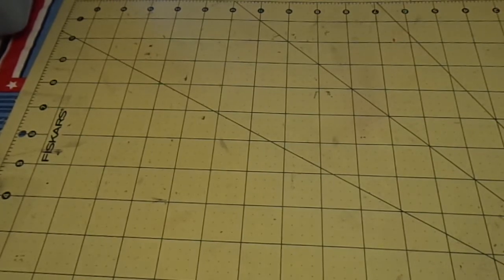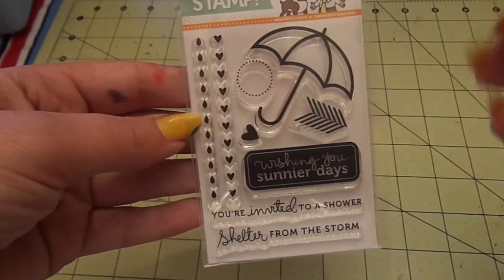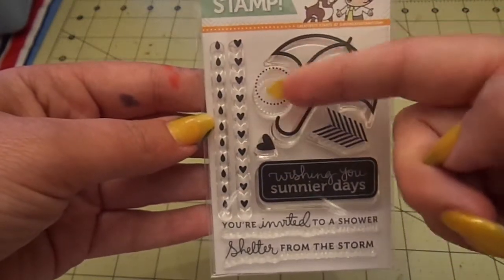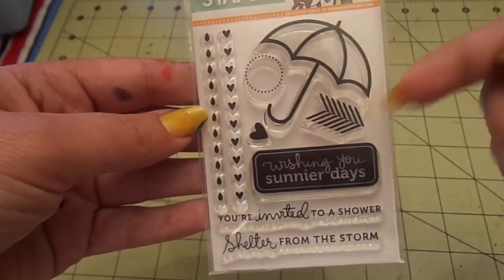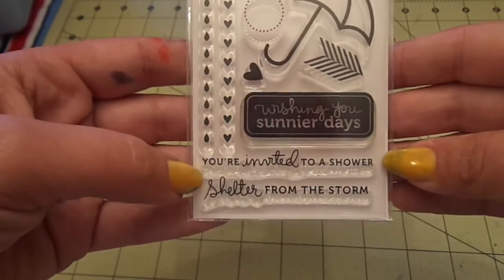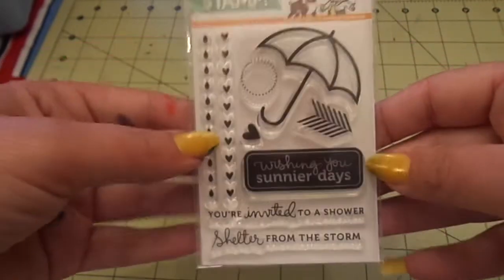So you get the sunnier days set which I love. I don't have this one. You get the raindrops, the hearts, the circle, the heart, the umbrella, the arrow, wishing you sunnier days, you're invited to a shower and shelter from the storm.